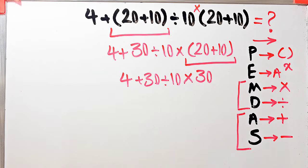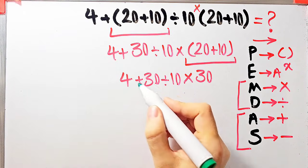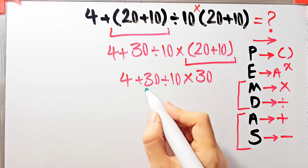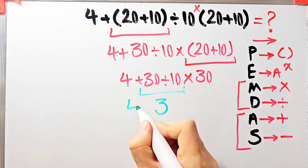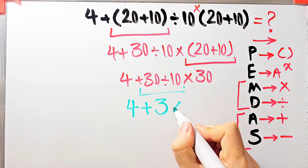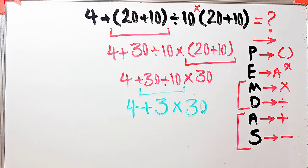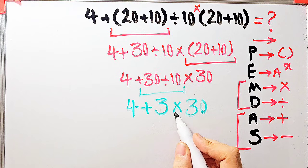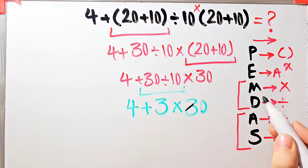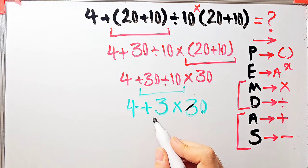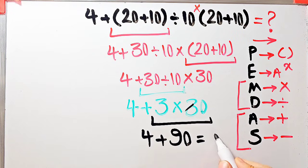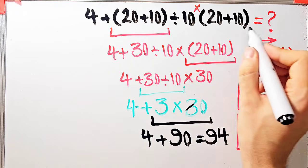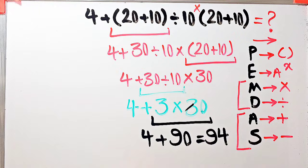Now we have addition, division, and multiplication. We simplify the division first: 30 divided by 10 equals 3. Now we have 4 plus 3 times 30. Next we simplify the multiplication because it has higher priority than addition: 3 times 30 equals 90. Now the question is 4 plus 90, and 4 plus 90 equals 94. The final answer equals 94.